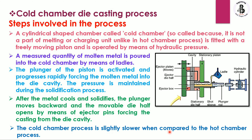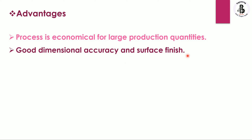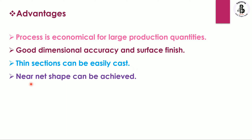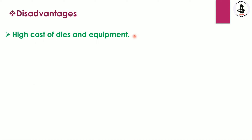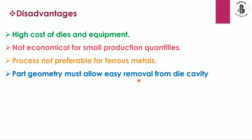The cold chamber process is slightly slower than the hot chamber process because the heating is done outside the setup, whereas in the hot chamber process the heating is part of the process itself. Some advantages of this process: it is economical for large production quantities; good dimensional accuracy and surface finish are achieved; thin sections can be easily cast due to the pressurized injection; and near net shape can be achieved. Some disadvantages include: high cost of dies and equipment since dies are made of high grade metallic materials; not economical for small production quantities; the process is not preferable for ferrous metals; and part geometry must allow easy removal from the die cavity.